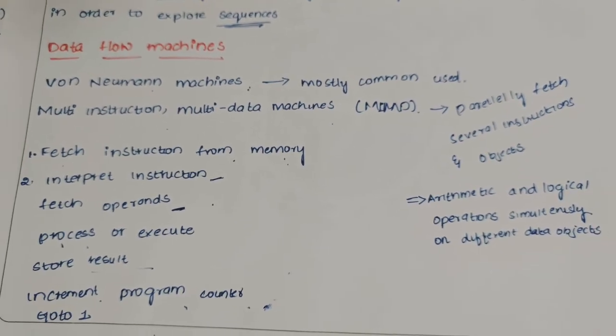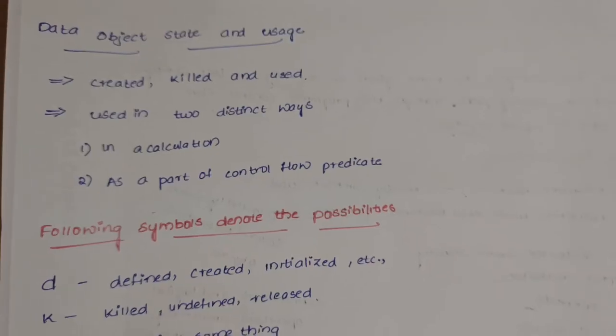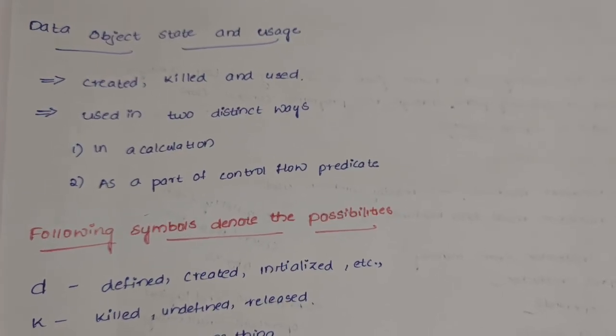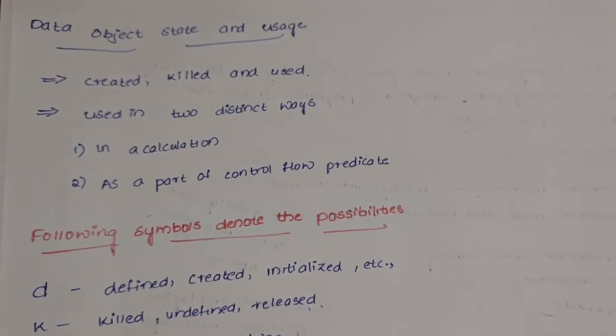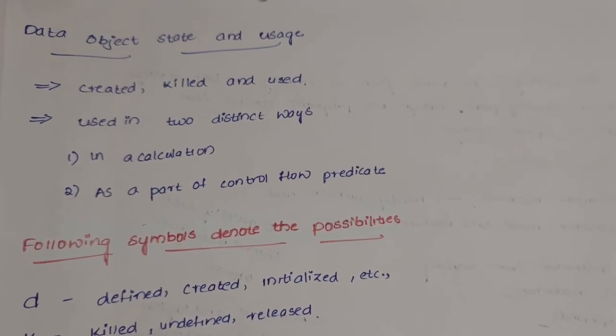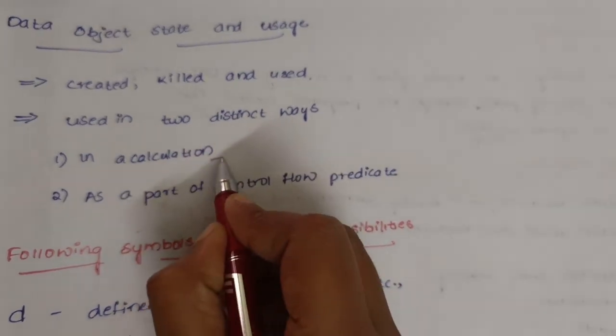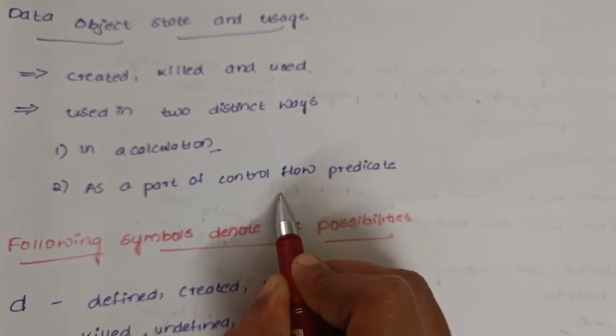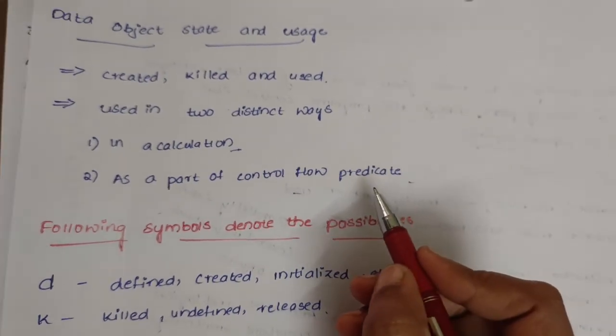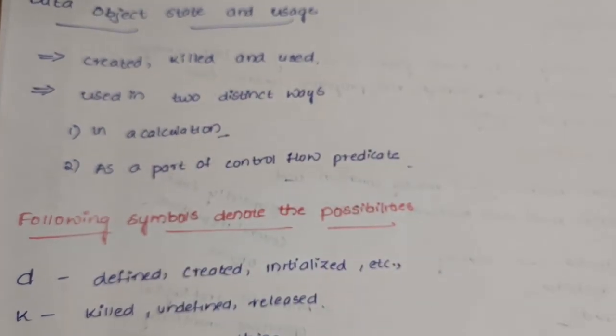Objects, data, and usage: first, a data object is created and used for some calculations or anything else, then killed. These data objects can be used in two ways: first, in calculations, and second, in control flow predicates. Whatever data objects we define in the control flow graph, they have some following symbols.